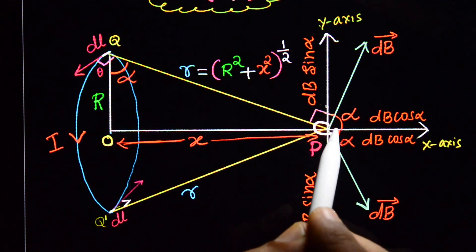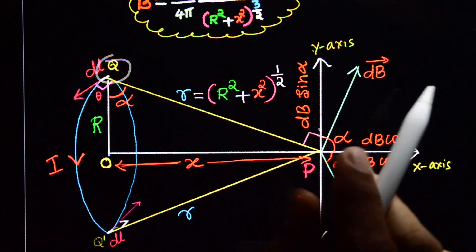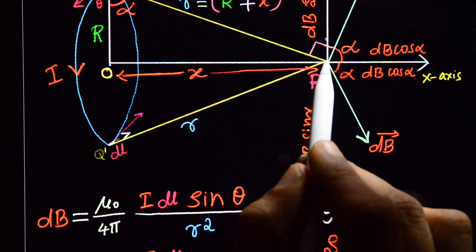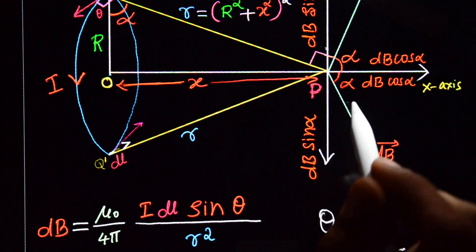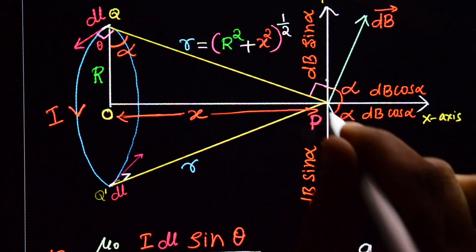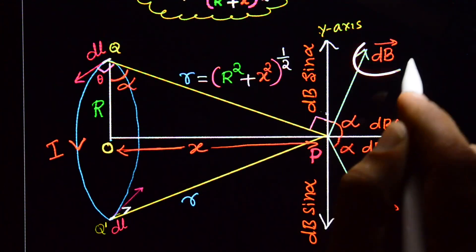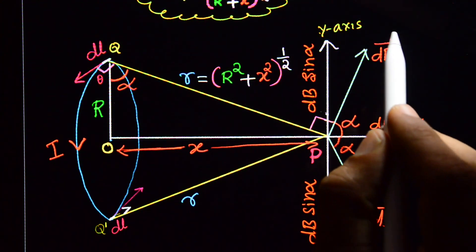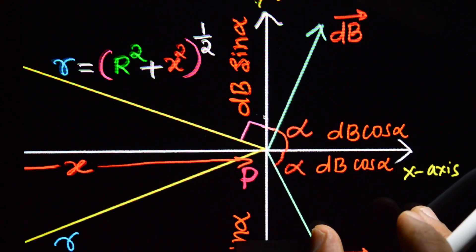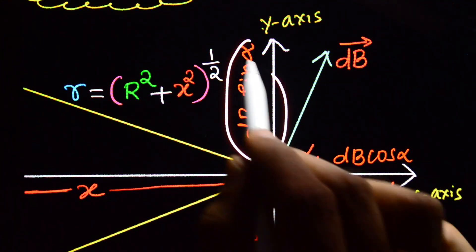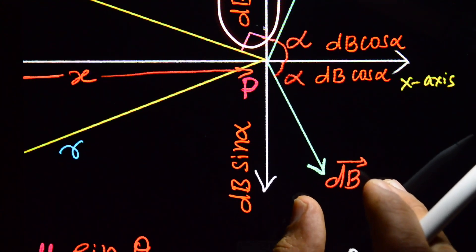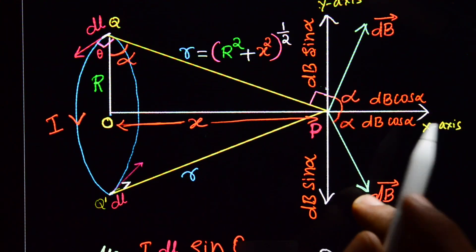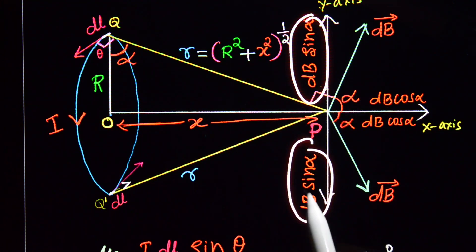The magnetic field at point P due to current element Q is DB, which is in one direction. Similarly, the magnetic field at point P due to the diametrically opposite current element Q' is also DB, in a different direction. This DB makes an angle alpha with the X-axis. Therefore DB can be resolved into two components: DB cos(alpha) along the X-axis, and DB sin(alpha) along the Y-axis.